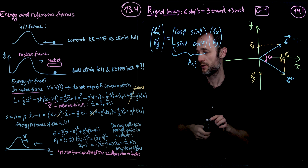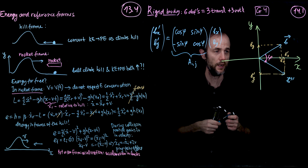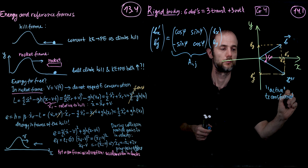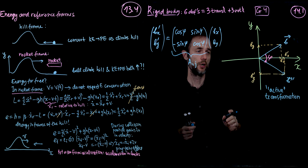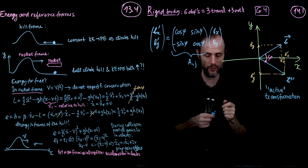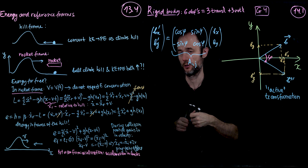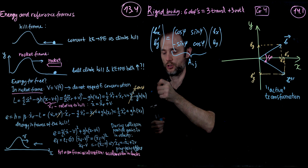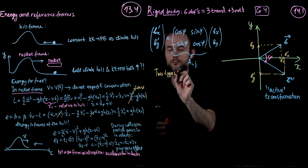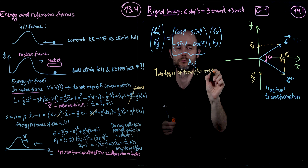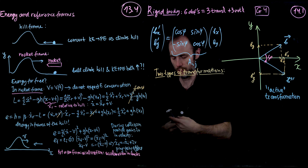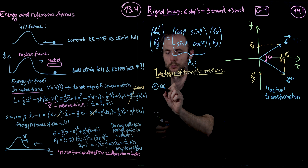Using the regular rotational matrix, we can write it out as: cosine phi, sine phi, minus cosine phi, cosine phi, times Bx, By.